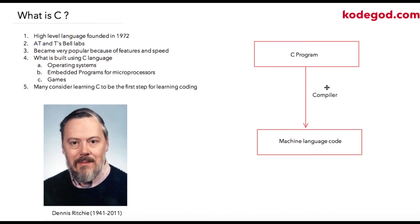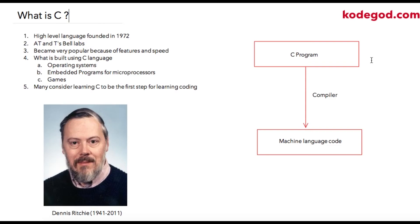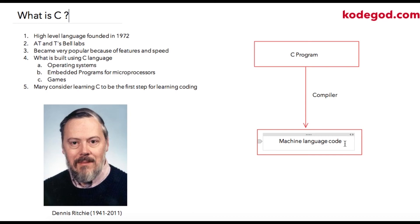So when we write a C program, that program is used by a compiler. It compiles that code to convert it into machine language code. Machine language code is the code which computers can understand. They cannot understand C program code directly. However, writing C programs is easier for us, so instead of writing directly in machine-level language, we can write in C programs, which is a high-level language, closer to English as compared to machine-level language code, which is usually 1s and 0s.